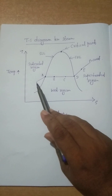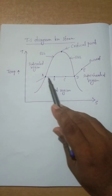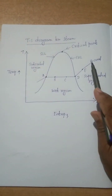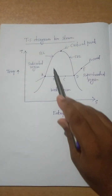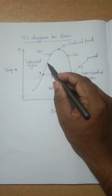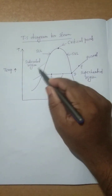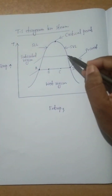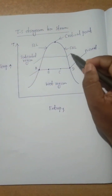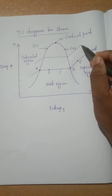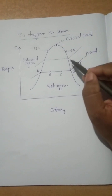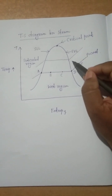This line indicates a constant pressure line. Similarly, if you draw another line, that is also a constant pressure line. On the T-S diagram, this type of line is known as a constant pressure line.